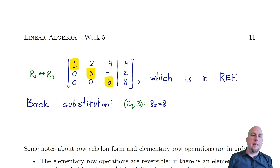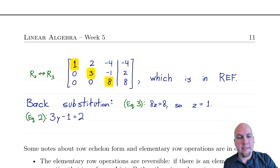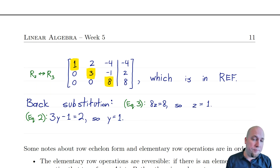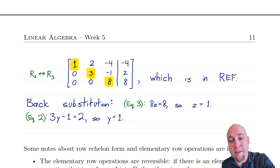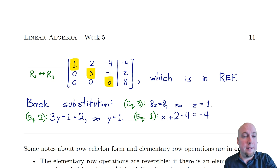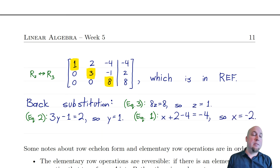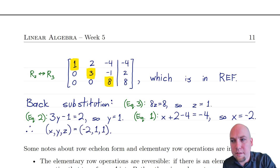From row echelon form we do back substitution. The bottom equation says eight times z equals eight, so z equals one. Substituting into equation two: three y minus one equals two, so y equals one. Substituting both into the top equation: x plus two times one minus four times one equals minus four, giving x plus two minus four equals minus four, so x equals minus two. The solution is x equals minus two, y equals one, z equals one.